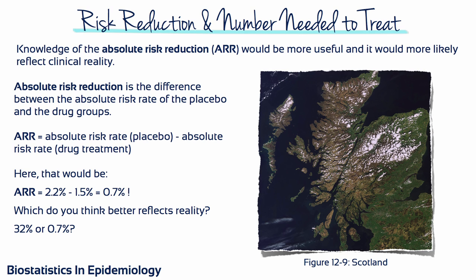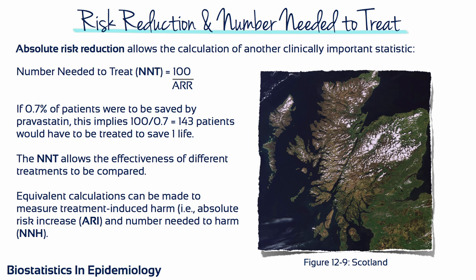Absolute risk reduction is the difference between the absolute risk rates of the placebo and drug groups. Here, that is 2.2% minus 1.5%, which equals 0.7% — a pretty small number. Given these numbers, which better reflects reality: relative risk reduction or absolute risk reduction? Absolute risk reduction also allows you to calculate a statistic called numbers needed to treat, or NNT. NNT equals 100 divided by absolute risk reduction. Here, that is 100 divided by 0.7, which equals 143 — the number of people you would need to treat to save one life. What if the NNT were a million? What if it was 3? How would you think differently about it?